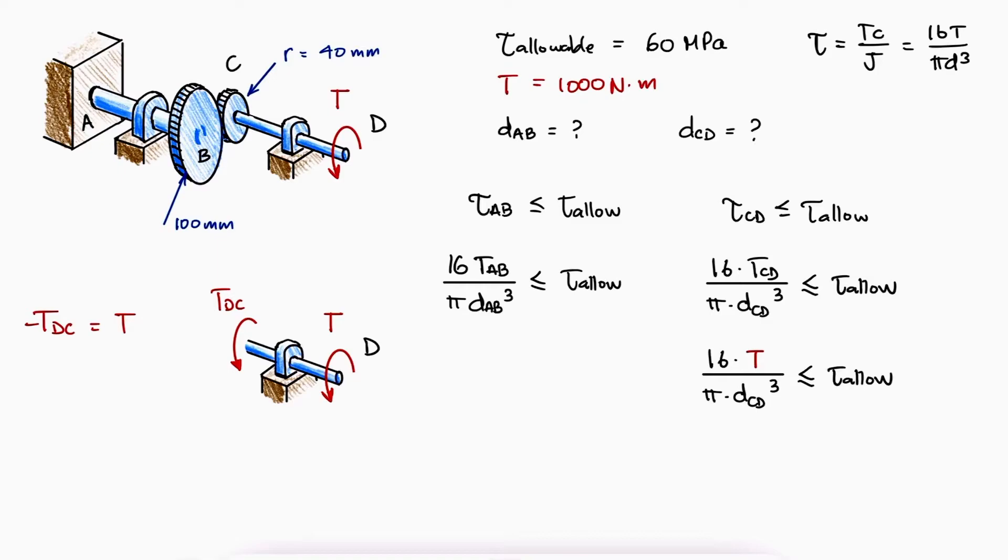But like we explained in the main video, the direction or sign of the torsional shearing stresses are not yet important. From this equation, we can solve for the diameter of rod CD.